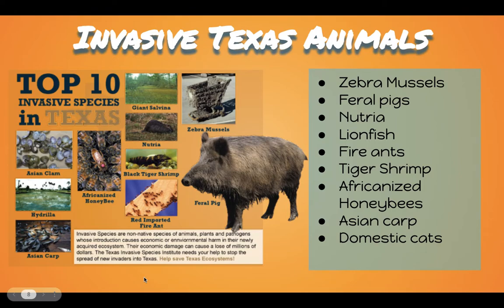Now let's talk about invasive Texas animals. I've got an infographic from the Texas Invasive Species Institute. These are animals that are introduced to Texas — they are not from here, they are detrimental to native animals and plants, and they wreak all sorts of havoc. Some examples are zebra mussels, feral pigs, nutria, lionfish, fire ants, tiger shrimp, Africanized honeybees, Asian carp, and domestic cats. People don't often think of domestic cats as invasive, but we'll get to the reasons why they made it on this list.